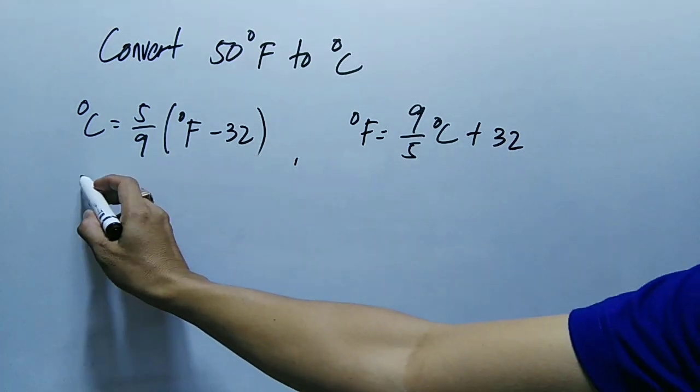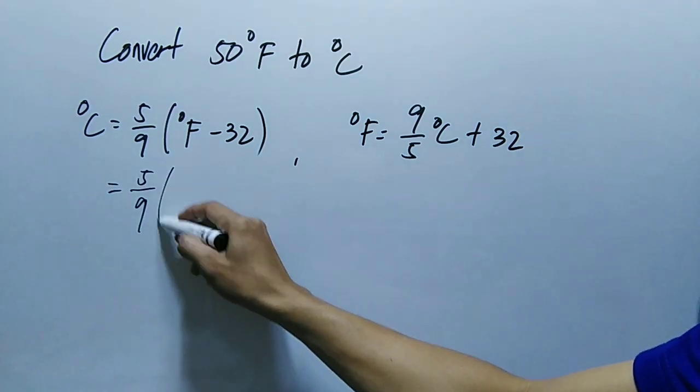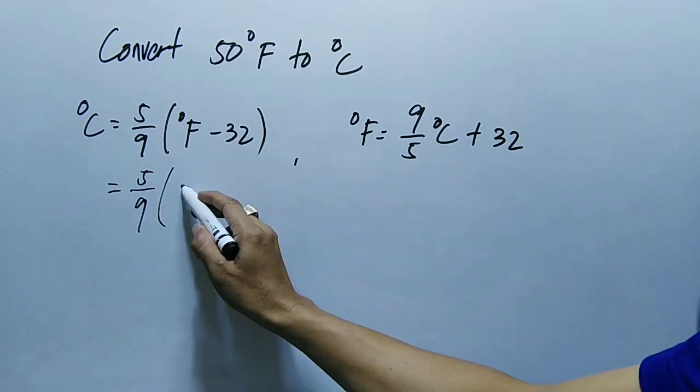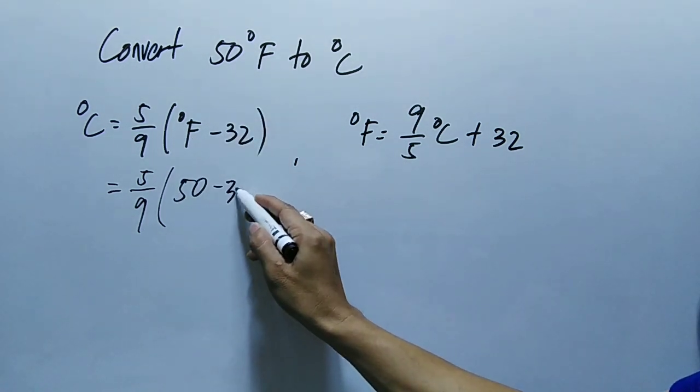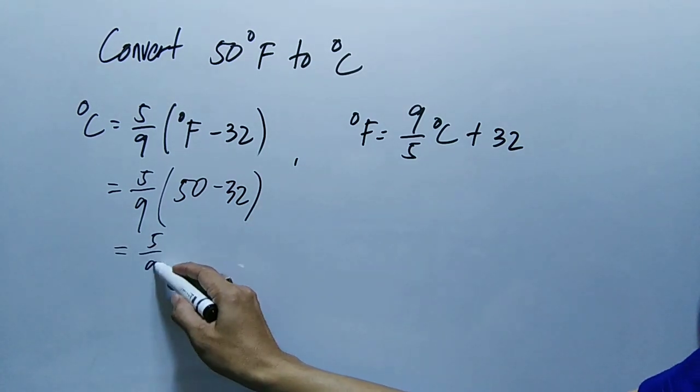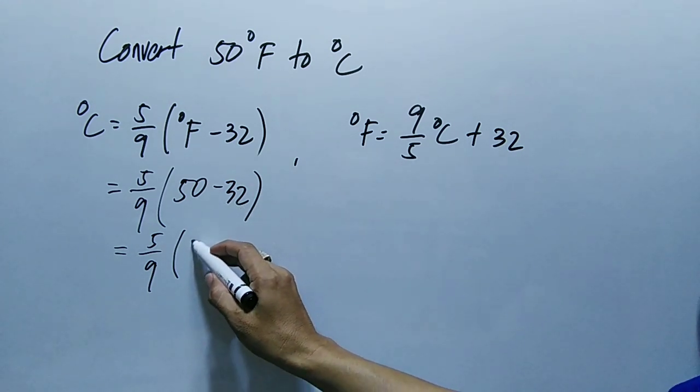So degree Celsius equals 5 over 9 times the value of degree Fahrenheit, 50. So 50 minus 32 equals 5 over 9 times 50 minus 32, that is 18.